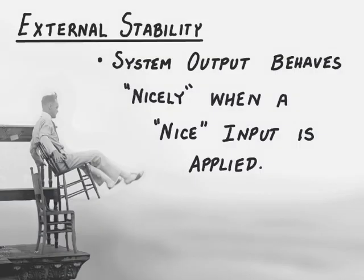In our previous lecture we said there were two types of stability that we were going to examine: internal stability and external stability. In this lecture, we'll look more at external stability, and we'll examine a particular type of external stability referred to as bounded input-bounded output stability, or BIBO stability.